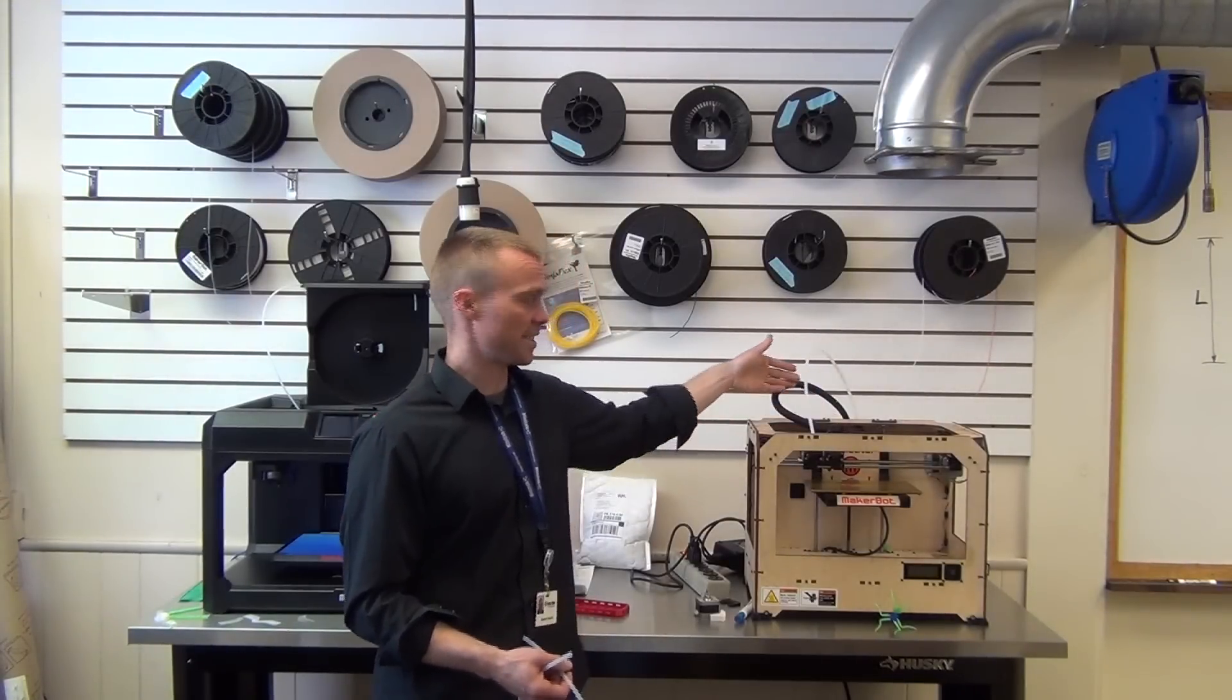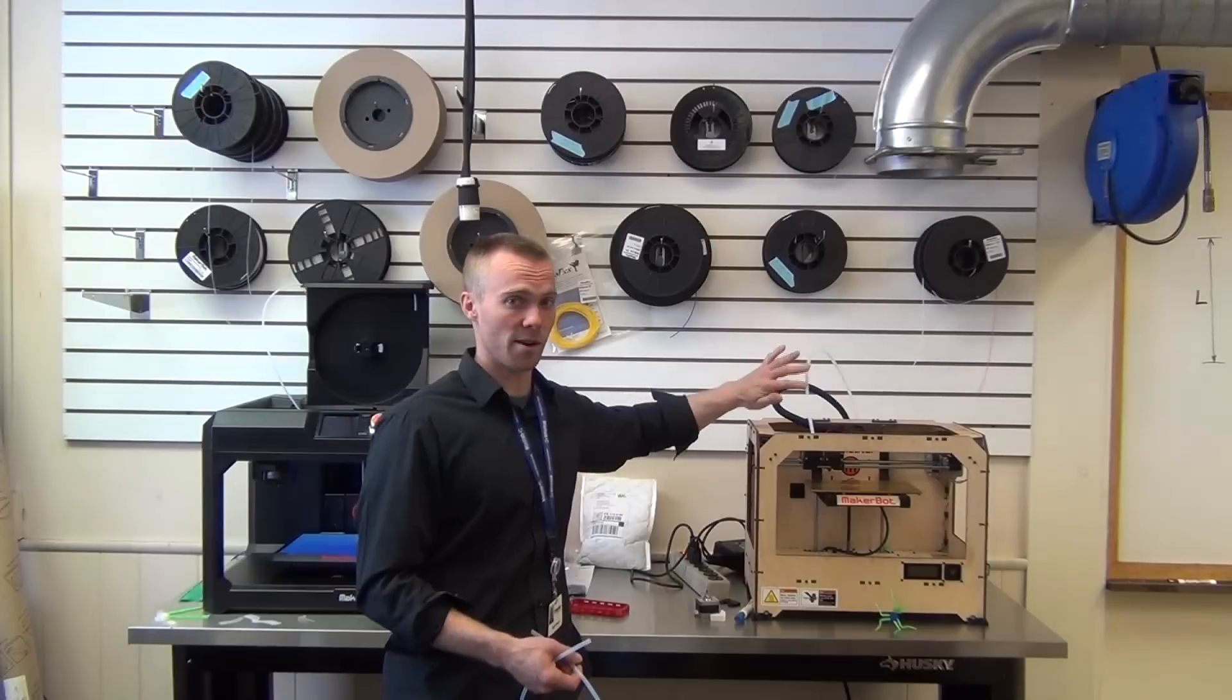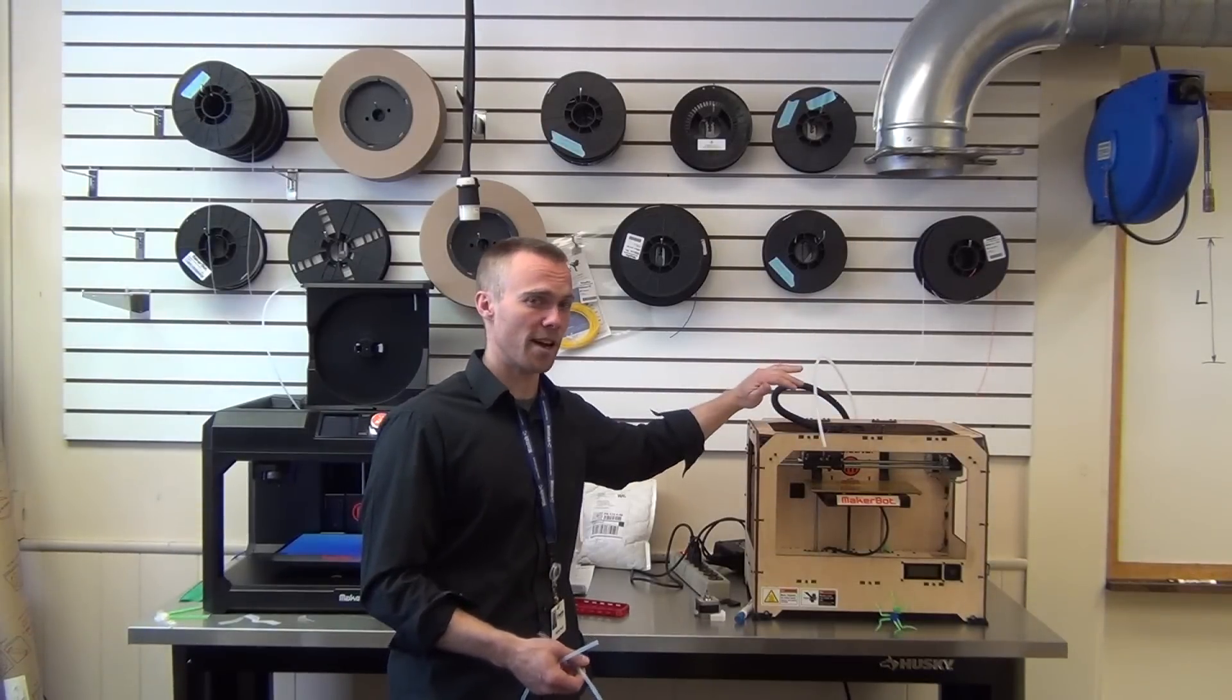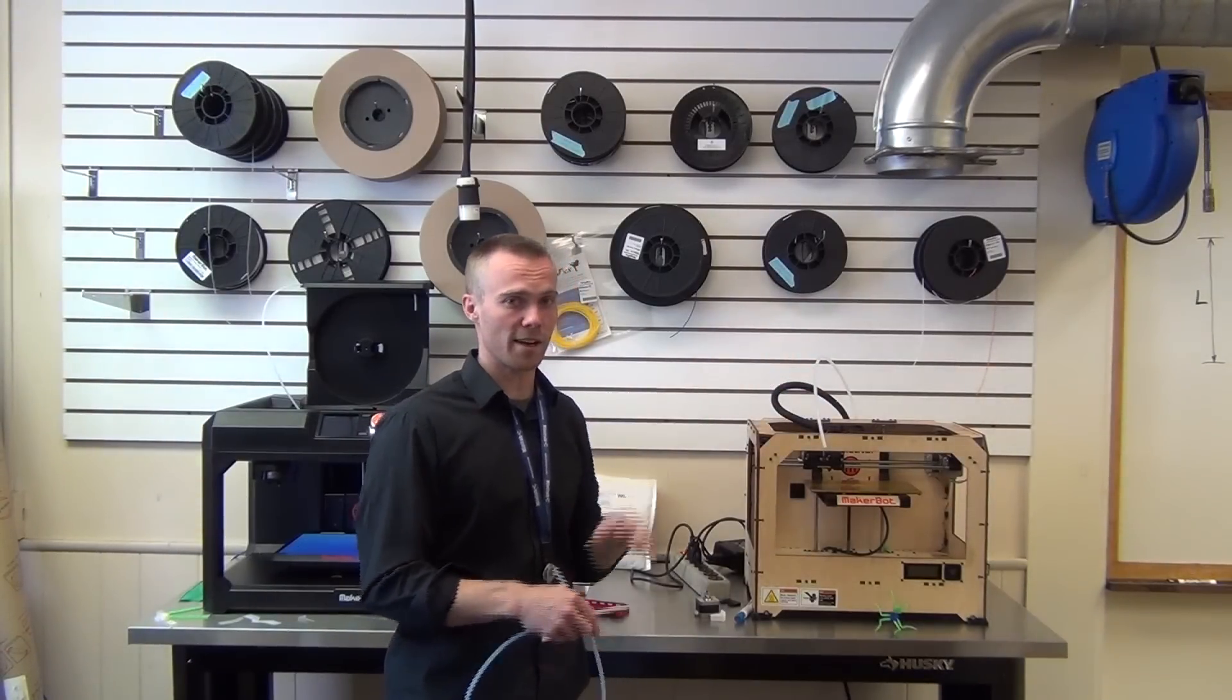The nice thing about this design is that the guide tube just goes through a 180 degree arc at a pretty large radius, so it doesn't generate a lot of drag. You can get a little bit of initial drag from the fact that the guide tube is mounted against the back of the printer.